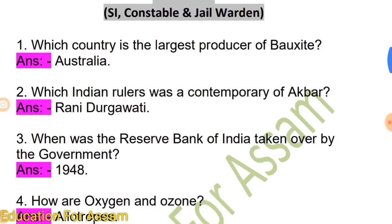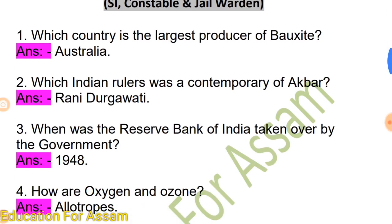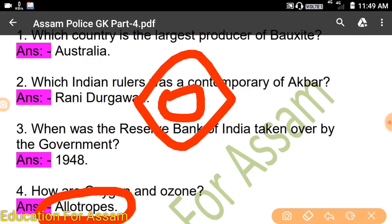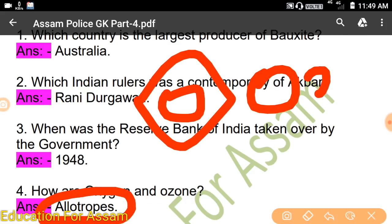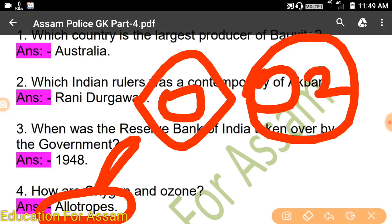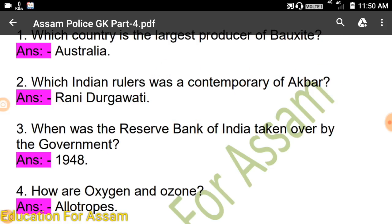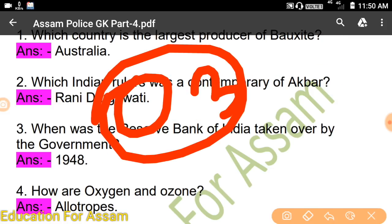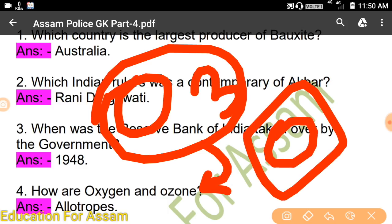How are oxygen and ozone related? What is ozone? Ozone means oxygen. Oxygen gas — oxygen is very strong.